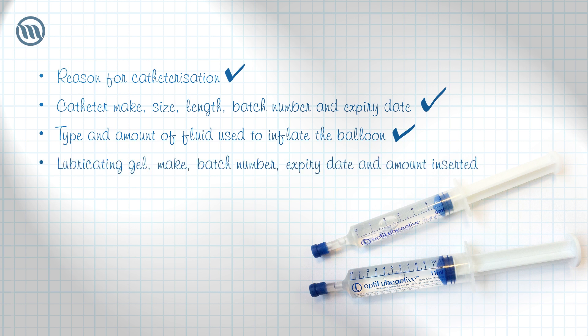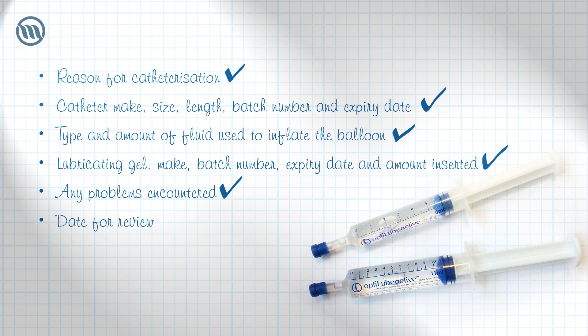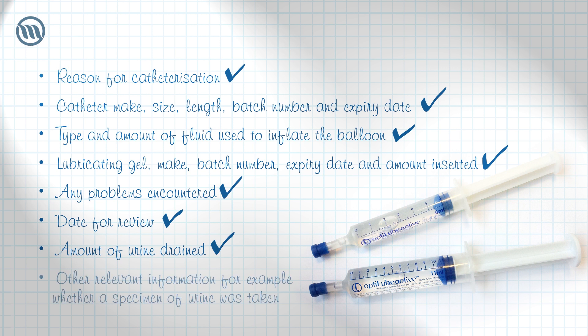Also document the batch number and expiry date of the lubricating gel and the amount inserted; any problems during the catheterization process; the date when the catheter should be reviewed; the amount of urine which drained from the bladder; and any other relevant information, for example whether a specimen of urine was taken.